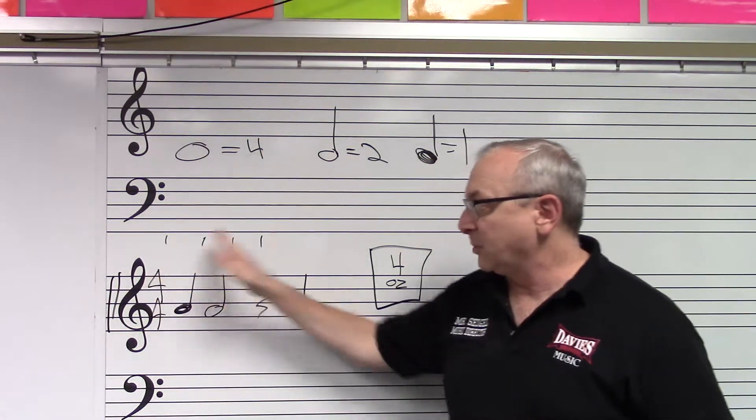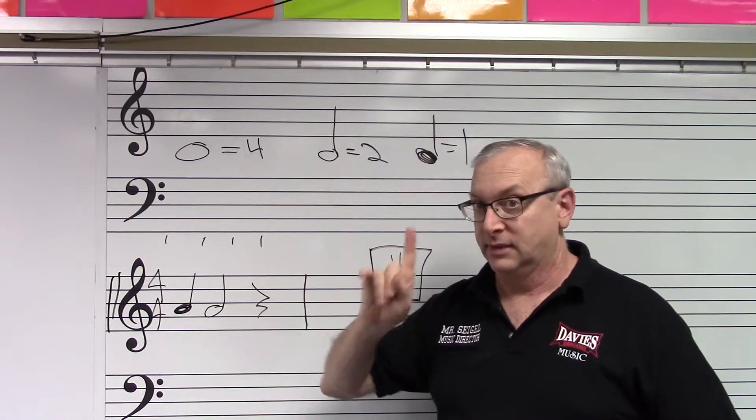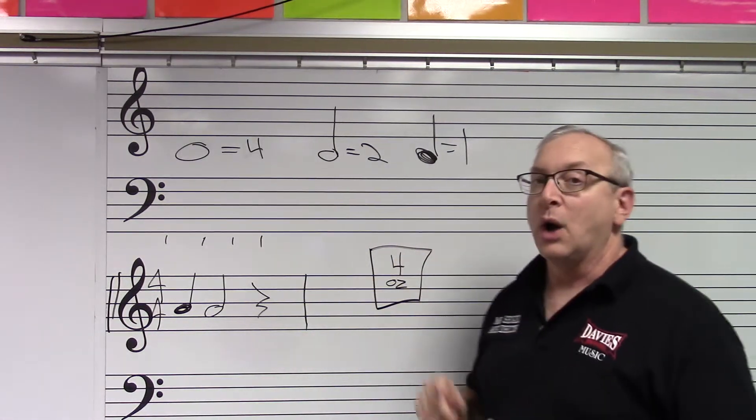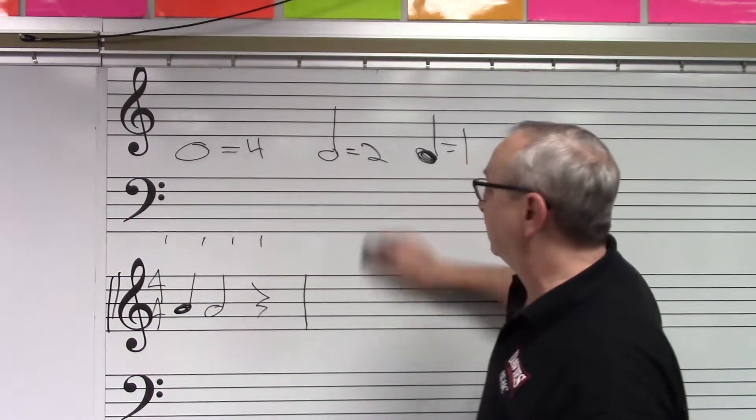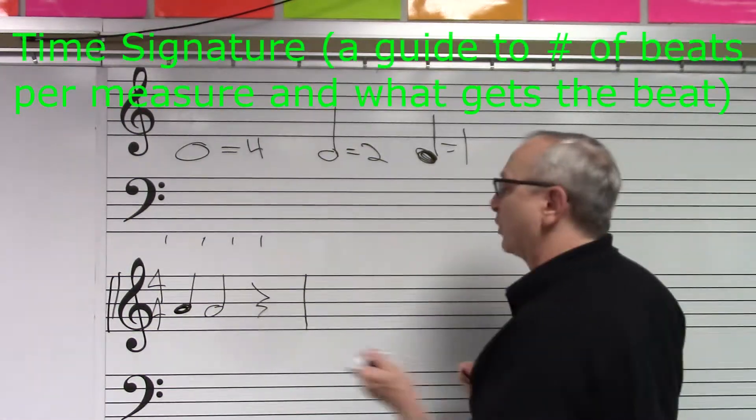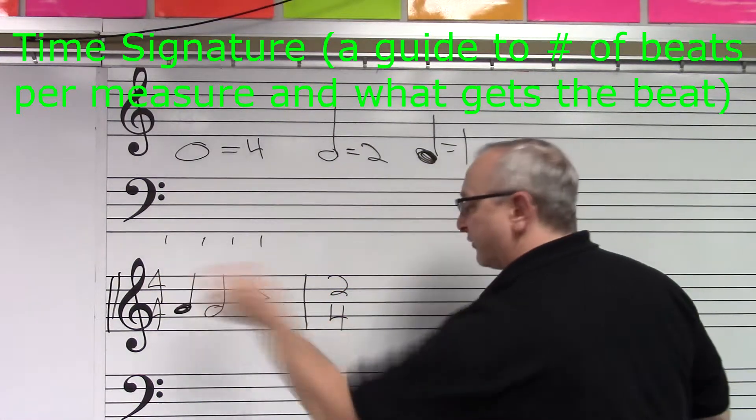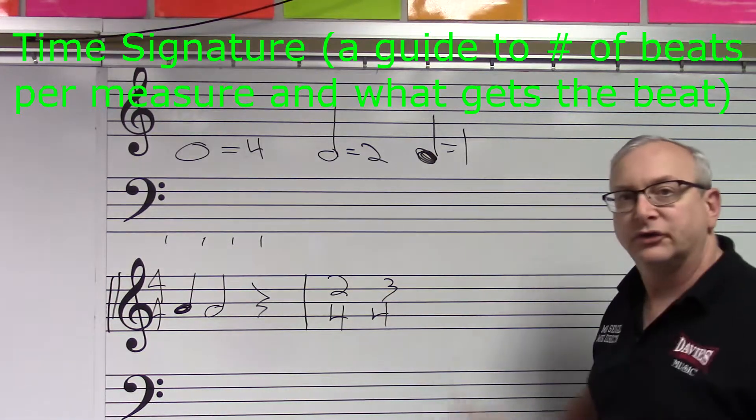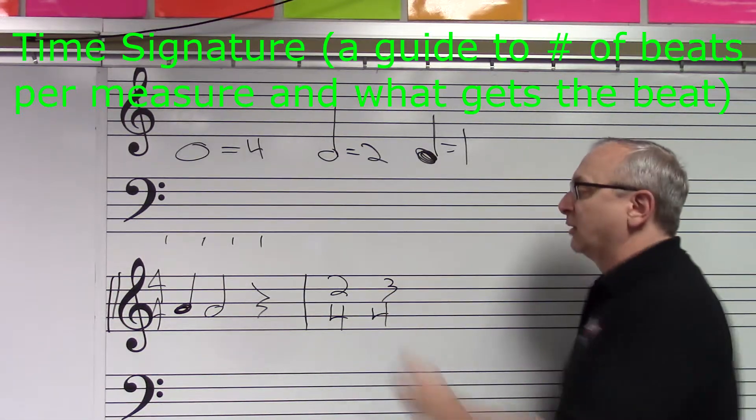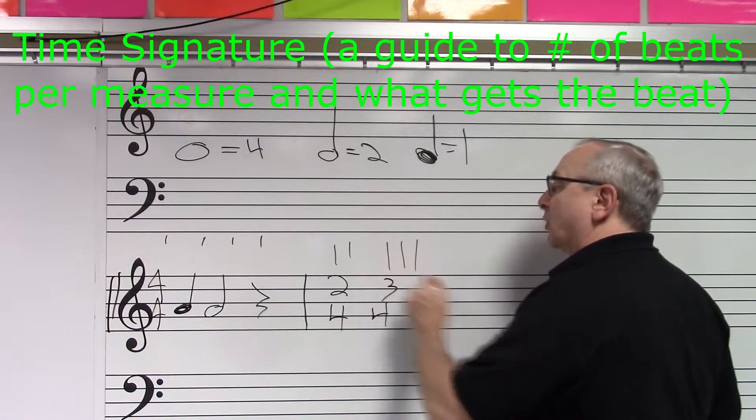So four beats per measure, or four pulses per measure, and the quarter note gets the pulse. Most of the time signatures that you will usually see have that four on the bottom: 2/4, 4/4, or 3/4. So most time signatures are either two beats or two pulses per measure, or three.